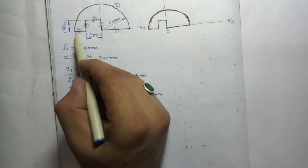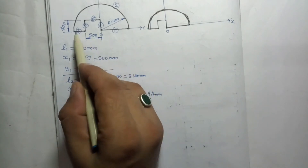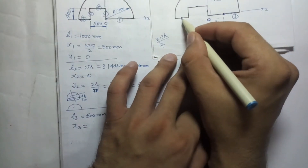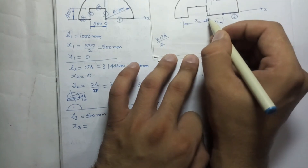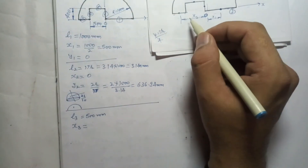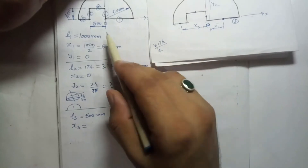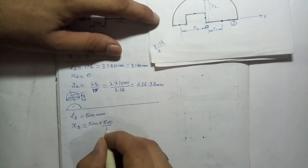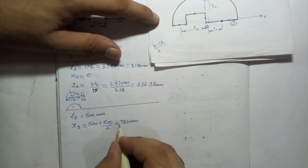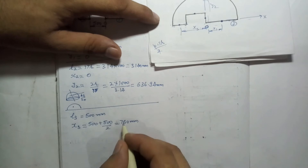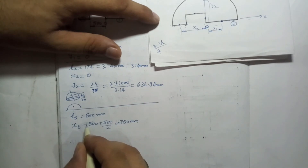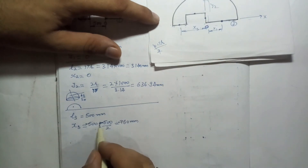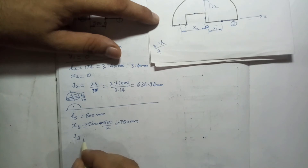For wire 3: the length l3 = 500 mm. For x3, this distance equals 500 (given) plus half of 500, which is 250, giving 750 mm — but it is in the negative direction, so x3 = −750 mm. Alternatively: −500 − 500/2 = −750 mm. y3 = 0 because there is no gap in the y-direction.